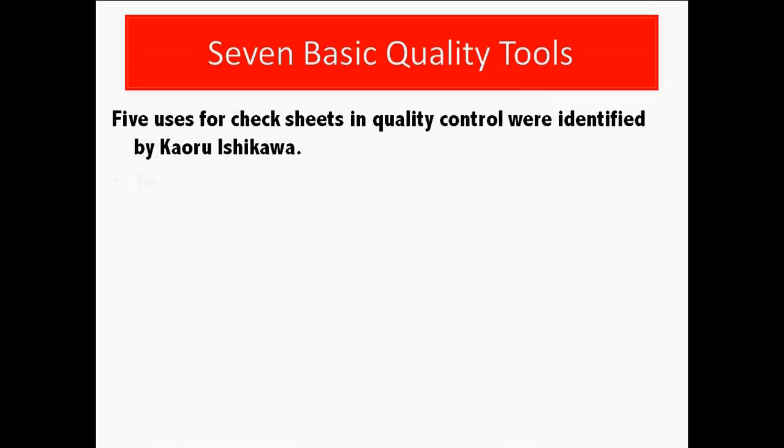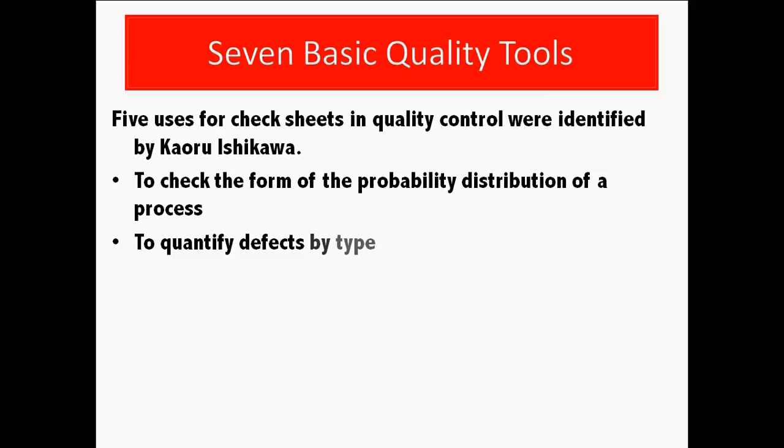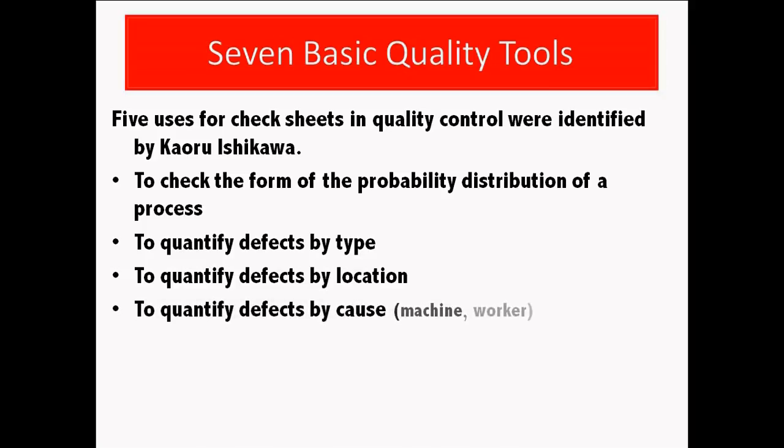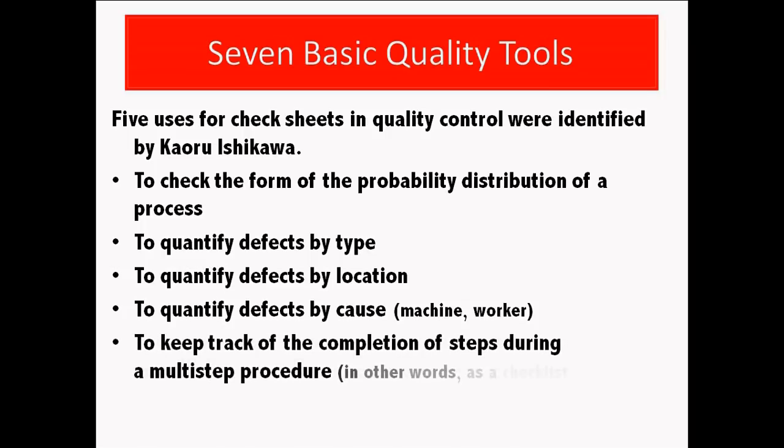5 uses for check sheets in quality control were identified by Kaoru Ishikawa. To check the form of the probability distribution of a process. To quantify defects by type. To quantify defects by location. To quantify defects by cause, e.g. machine, worker. To keep track of the completion of steps during a multi-step procedure.